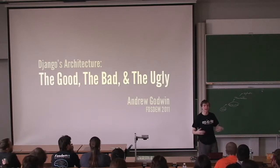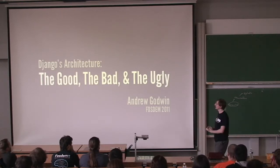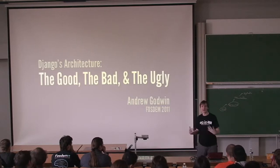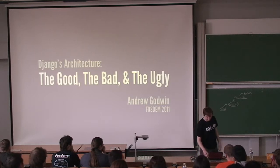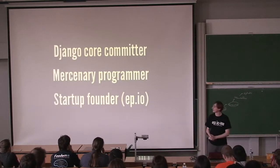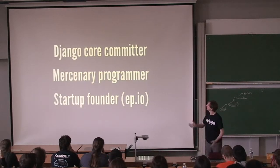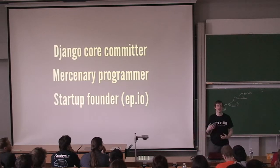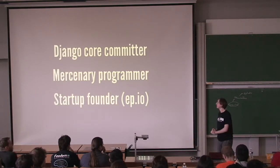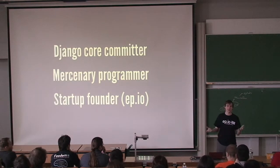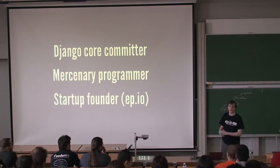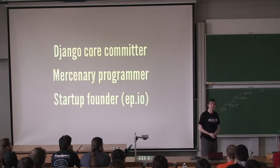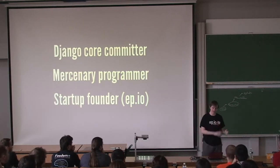I'm Andrew Godwin, and I'm going to give you a talk on Django's architecture: the good, the bad, and the ugly. I'll cover exactly what that means in a few short moments. First, an introduction to myself. I'm one of the Django core committers. I've been working with Django for about three years and became a core committer last year. At various times, I'm either a freelance or mercenary programmer, and at the moment I'm sort of founding a startup. It's more a project that evolved.